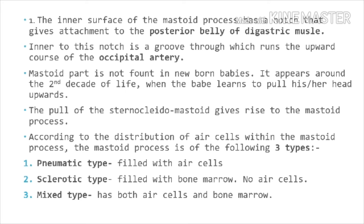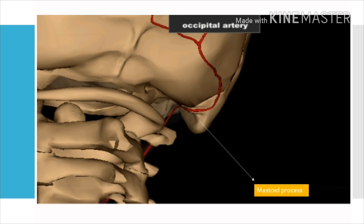According to the distribution of air cells within the mastoid process, it can be classified into three types: number 1, the pneumatic type, which is full of air cells; number 2, the sclerotic type, which is full of bone marrow; and number 3, the mixed type, which contains both air cells as well as bone marrow. This is the diagrammatic representation of the groove that bears the upward course of the occipital artery in the mastoid process.